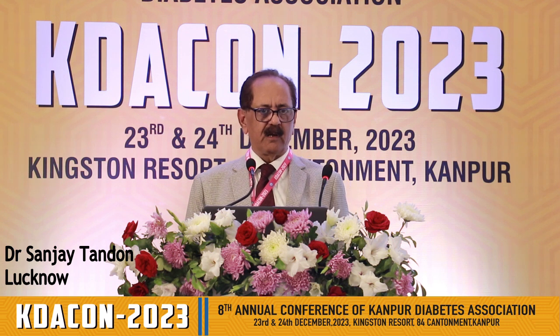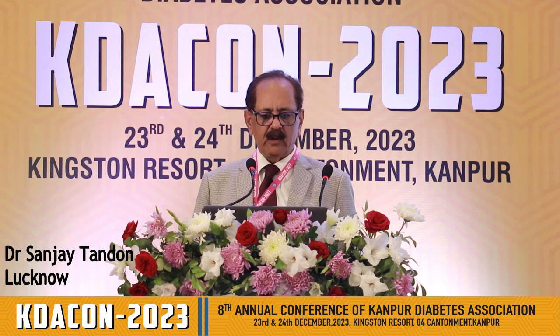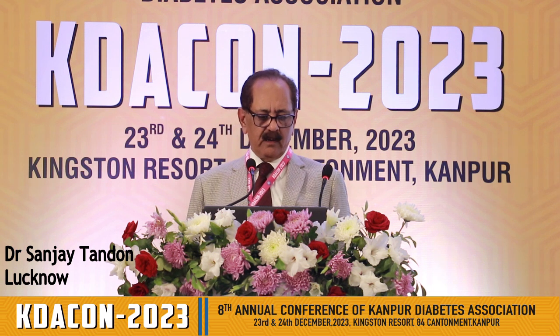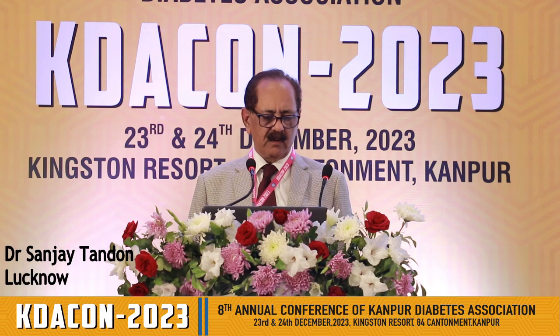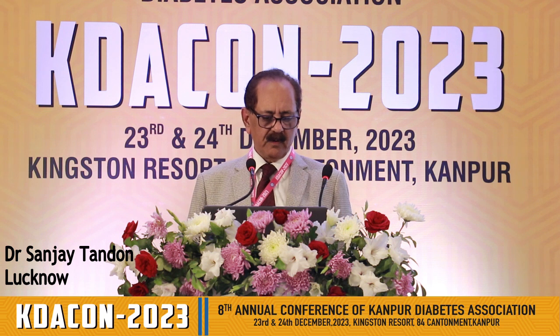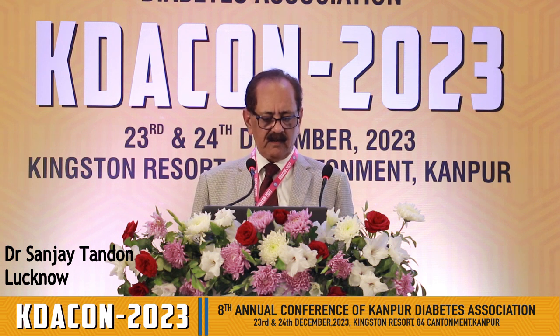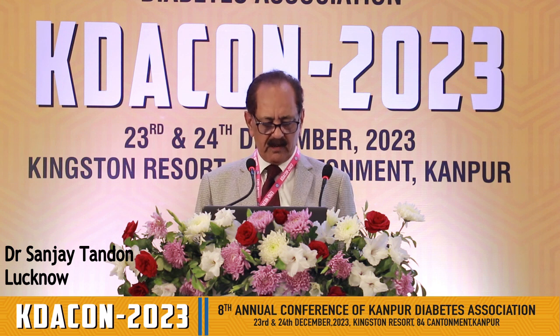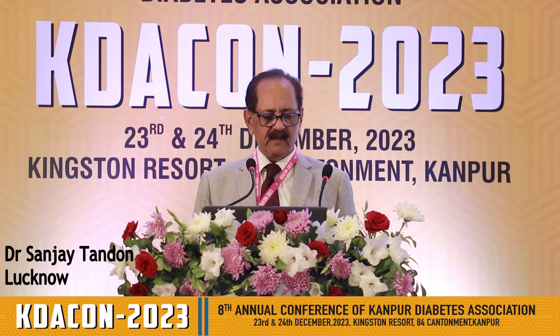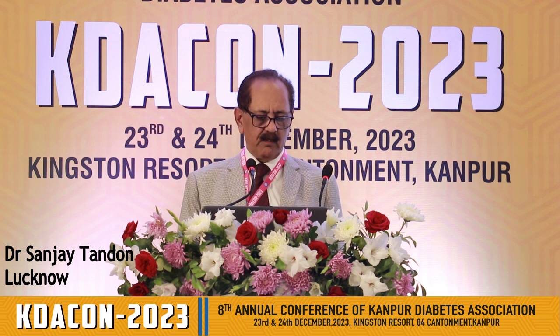Basically, all keto diets aim to reduce carbohydrate content. The usual components of keto diet include meat — steak, ham, sausages, bacon, chicken — fatty fish like salmon, trout, and tuna, omega-3 eggs, full heavy cream, cheese including unprocessed cheese like cheddar, goat, blue, or mozzarella, nuts and seeds, healthy oils, avocados, low carb vegetables, and condiments.